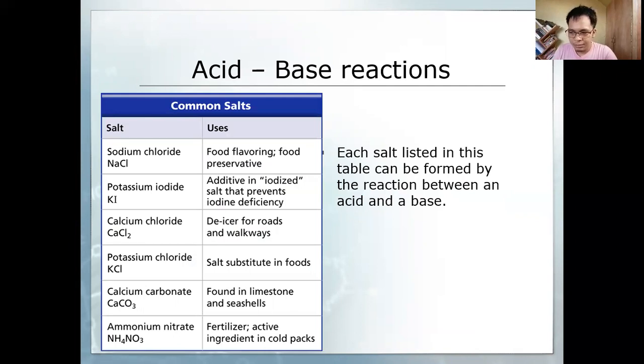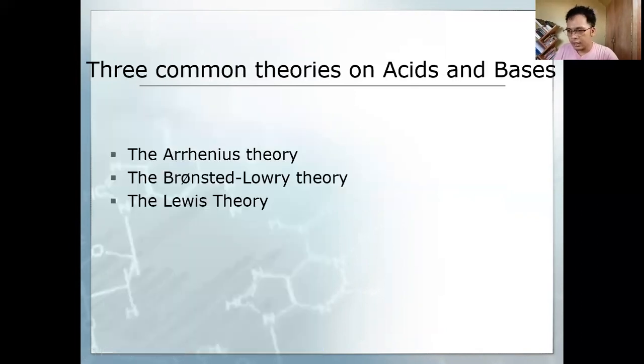Since I mentioned earlier that the product of acid-base reaction is a salt, here are some common salts we use in real life: sodium chloride is table salt, potassium iodide is added to iodized salt to prevent iodine deficiency and goiter, calcium chloride for de-icing roads and walkways, potassium chloride as salt substitute in foods, calcium carbonate found in limestone and seashells, and ammonium nitrate used for fertilizer. Each salt can be produced by using an appropriate acid and base.